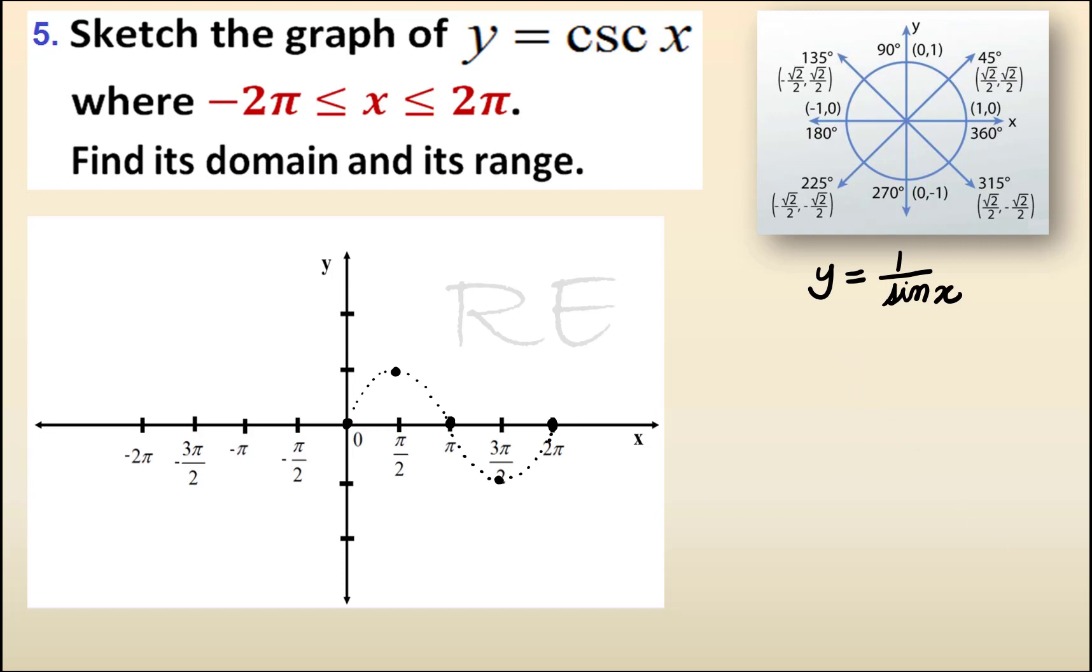Then, I'm going to say to myself that sine x, the denominator, cannot be 0. Therefore, all those points on the graph that are 0s become automatically vertical asymptotes.